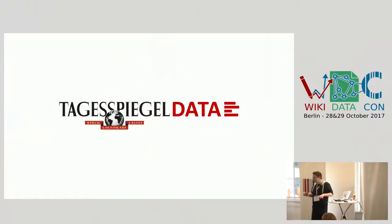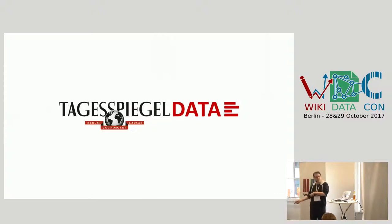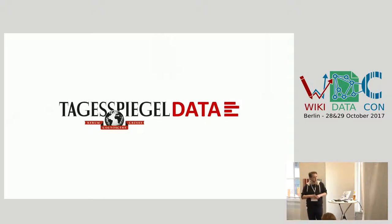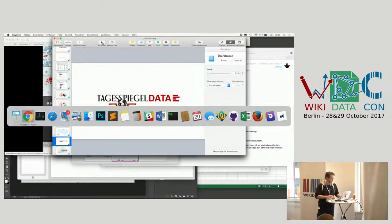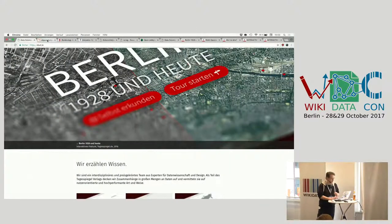Currently we're working at Tagesspiegel Data. We have two labels: one is Tagesspiegel Data for journalism, and Data Science and Stories for other companies. So if a company gives us a lot of data, we analyze it and show it to the public under the Data Science and Stories label. To show you what we're actually doing, I pulled up some websites, because we do everything in the web.